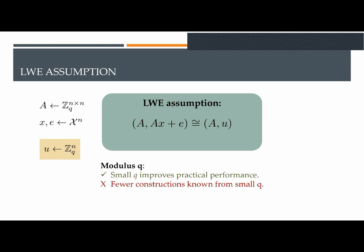Some parameters that would be useful for us are the following. First, the modulus q. Small modulus q implies faster protocols, and it's very good in practice. However, very few constructions are known from small q.